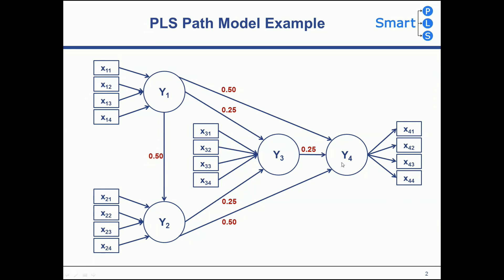For example, when looking at the target construct Y4, Y1 has a relatively high importance with a path coefficient of 0.5, while Y3 has a lower importance with a path coefficient of 0.25.